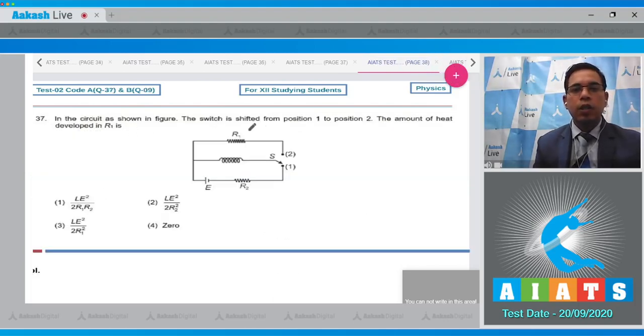Question 37 states that in the circuit shown in the figure, the switch is shifted from position 1 to position 2. The amount of heat developed in R1 is... Initially the switch is at position 1, now it is shifted to position 2.